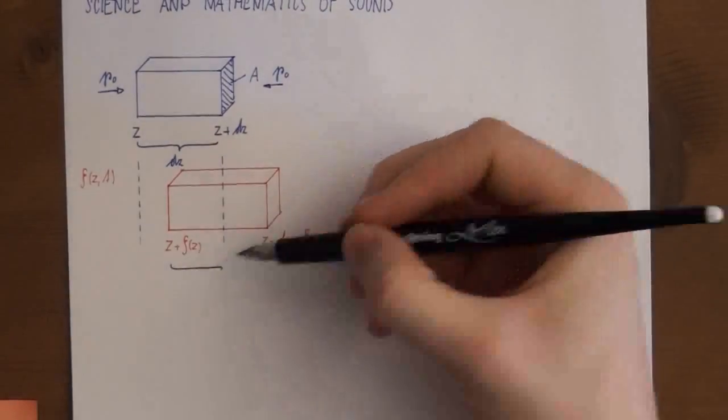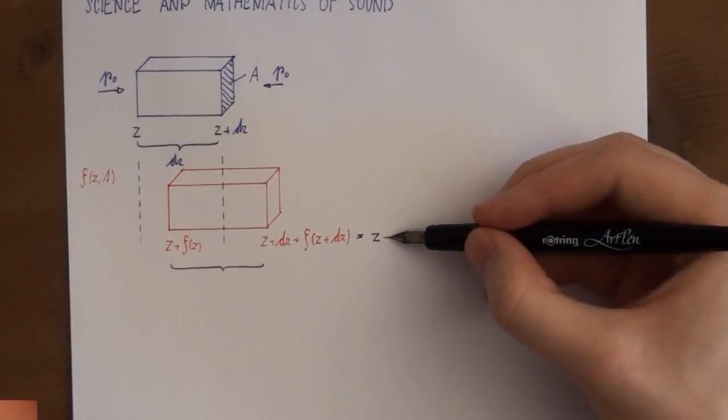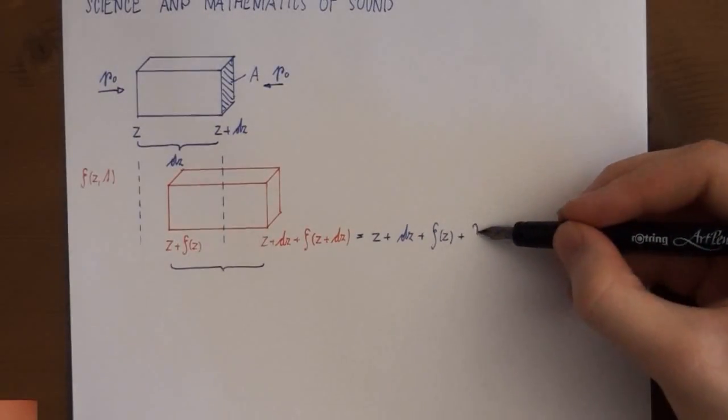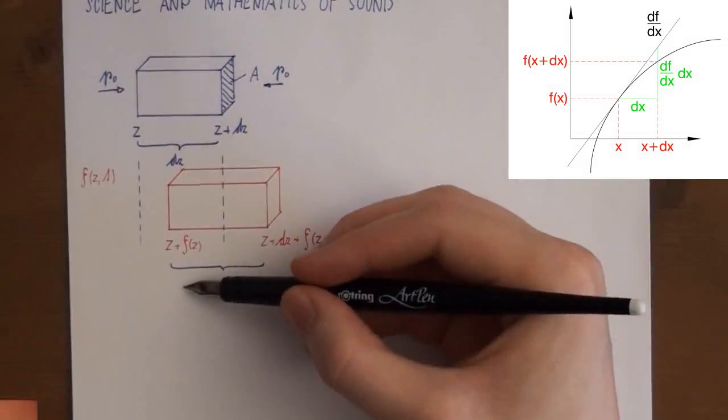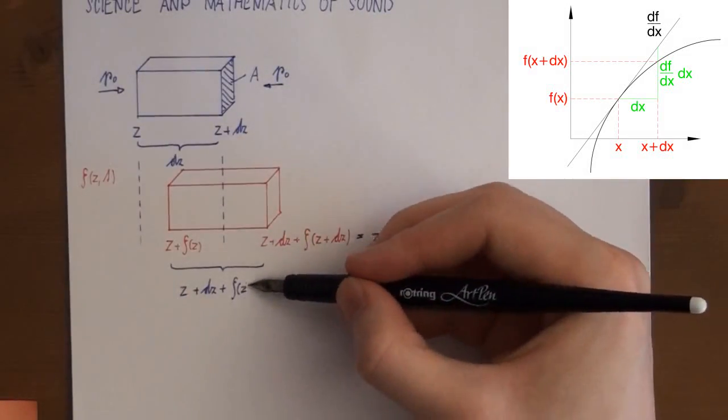The function Zeta of Z plus DZ can be expressed as Zeta of Z plus the partial derivative of Zeta with respect to Z times DZ. Because the derivative is a linear approximation this is correct for very short lengths.